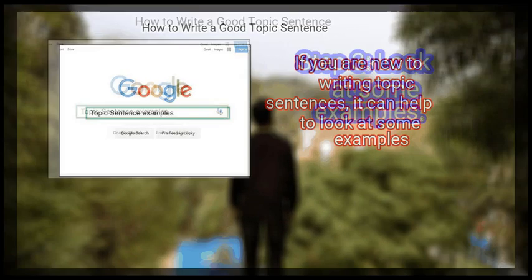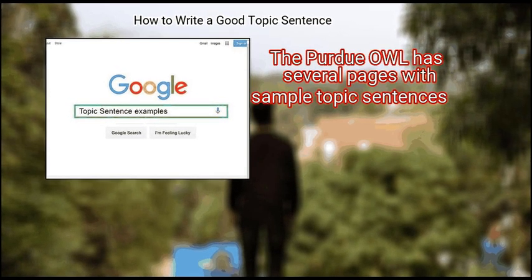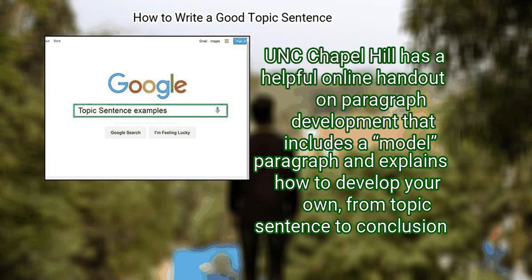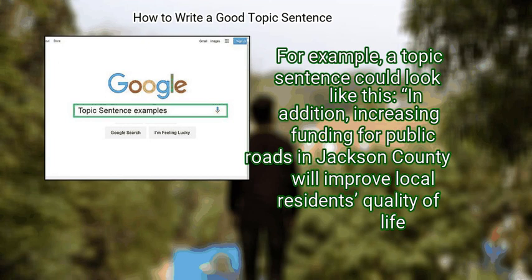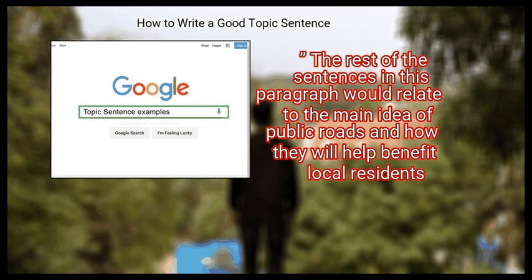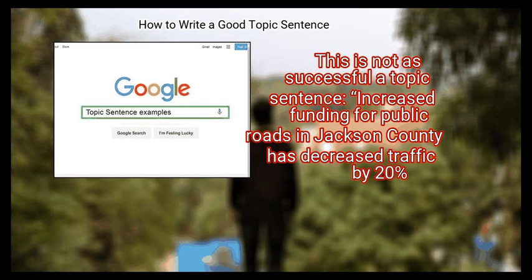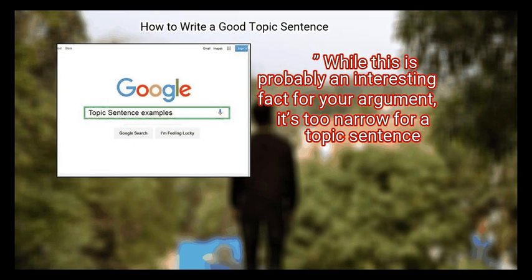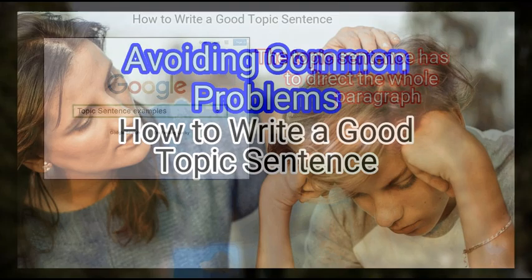Finally, look at some examples. If you are new to writing topic sentences, it helps to look at examples. Resources like Purdue OWL and UNC Chapel Hill's online handout on paragraph development can guide you from topic sentence to conclusion. For example, 'in addition, increasing funding for public roads in Jackson County will improve local residents' quality of life' is a strong topic sentence. In contrast, 'increased funding for public roads has decreased traffic by 20%' is too narrow — it's a fact, not a direction for the whole paragraph.